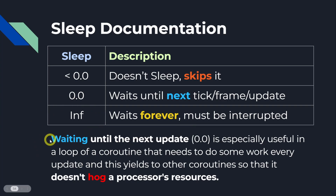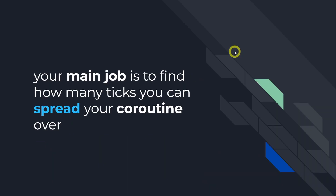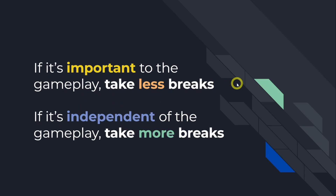Right from the documentation: waiting until the next update is especially useful in a loop of a coroutine that needs to do some work every update. This yields to other coroutines so that it doesn't hog a processor's resources. So if you have something doing a lot of work, use SleepZero to break up that work over multiple updates. Your main job is to find out how many ticks you can spread your coroutine over. If it's important to the gameplay, take less breaks. If it's independent of the gameplay, take more breaks — use SleepZero more often.